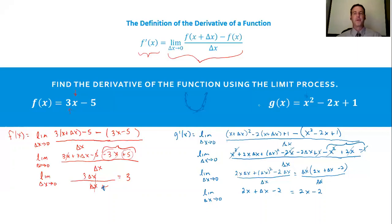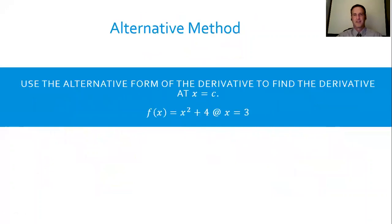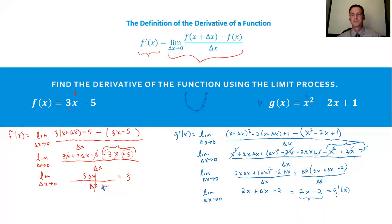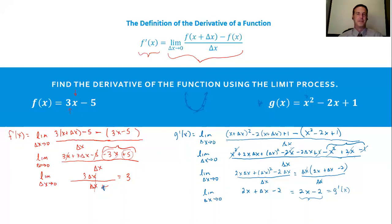What that tells you is for the original g of x function, which is a parabola, you can find the slope of the tangent line for any value of x by inputting that value into g prime of x. If that's a little confusing, go back, pause it, work backwards — it's a lot of algebra but that's what you've got to do. Sometimes people ask if we always have lines and parabolas, and the answer is no — you can have cubics too, though those are pretty rare.